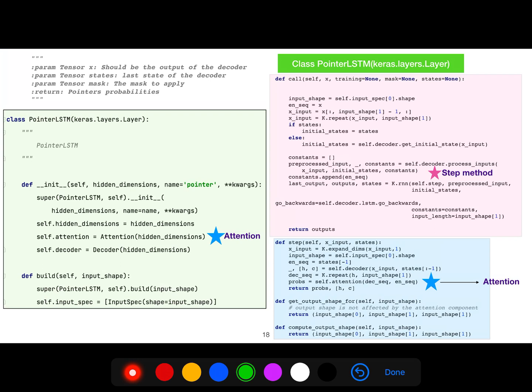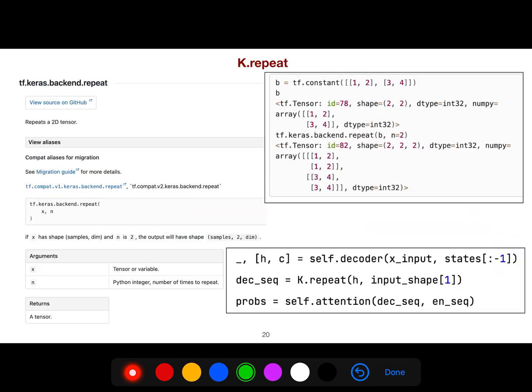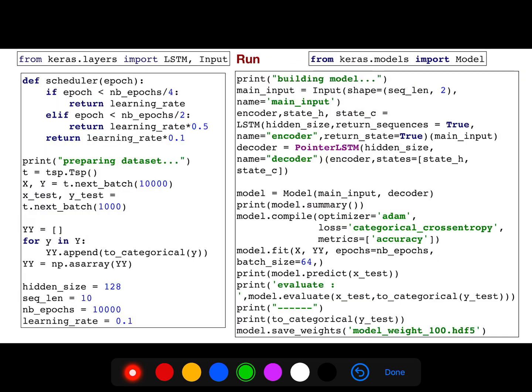In the pointer LSTM, the last module from those three modules that I said - the attention, we have implemented attention, decoder - so let's just build it. In order to build that, we say self.decoder.lstm.go_backwards. The step function in Keras and the repeat function, repeat method, is just repeating.